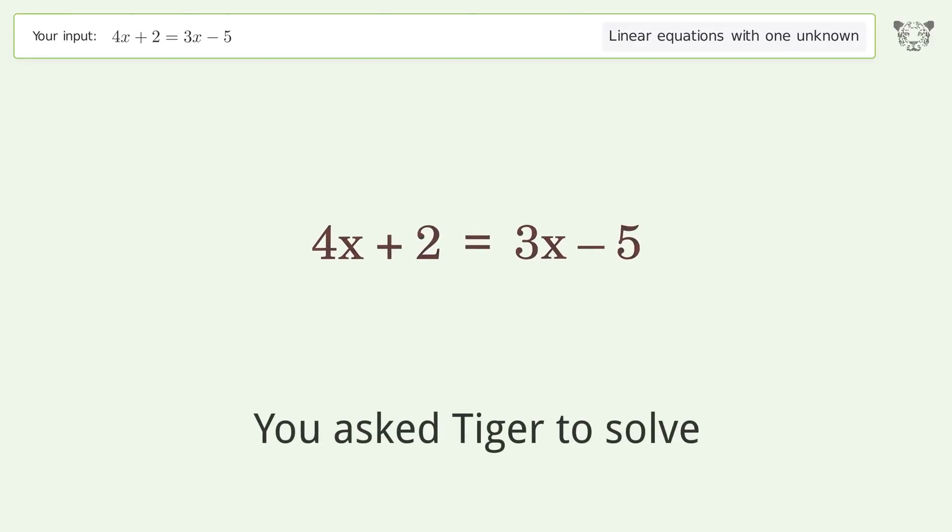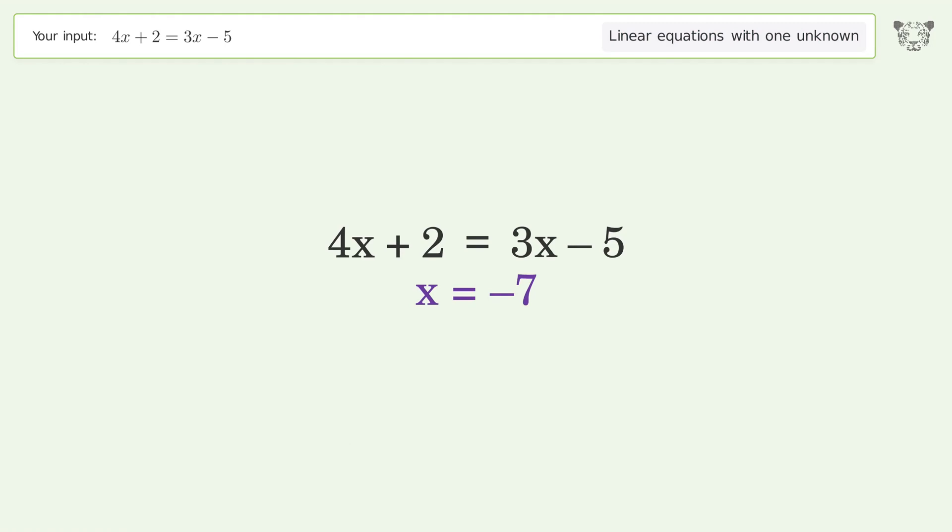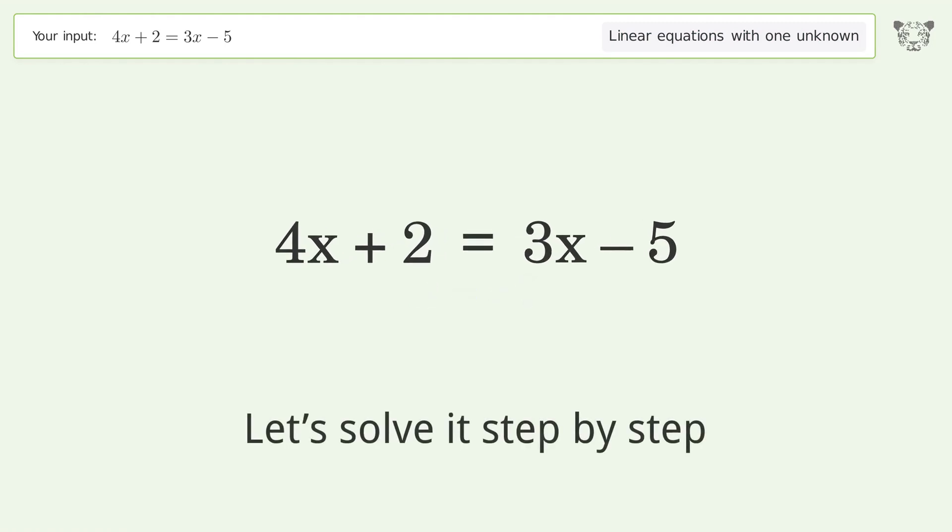You asked Tiger to solve. This deals with linear equations with one unknown. The final result is x equals negative 7. Let's solve it step by step.